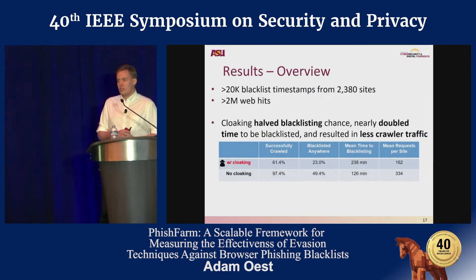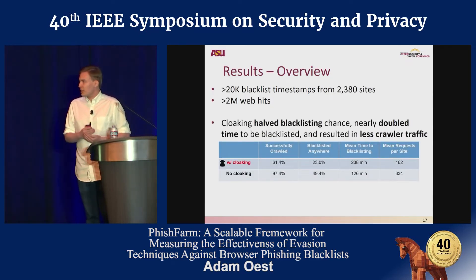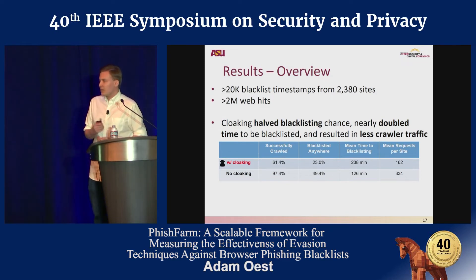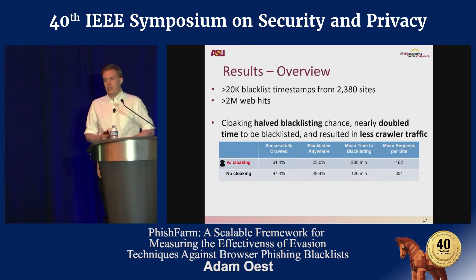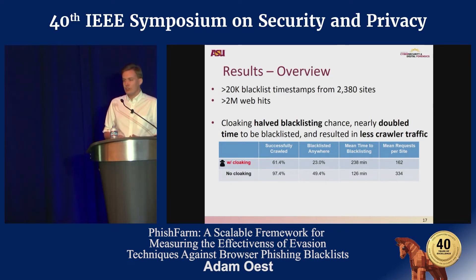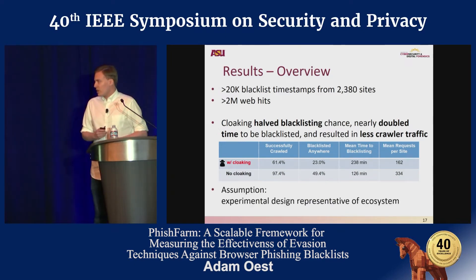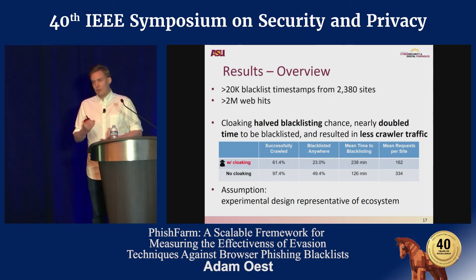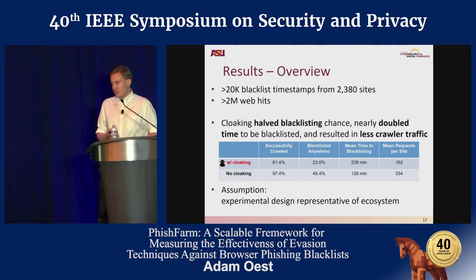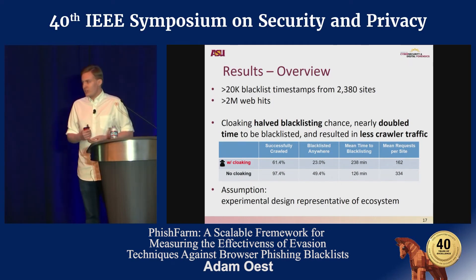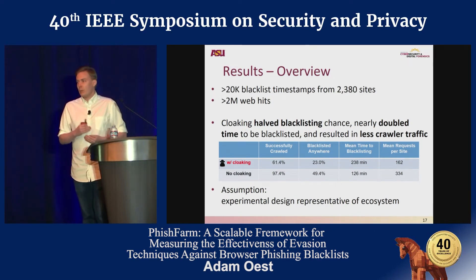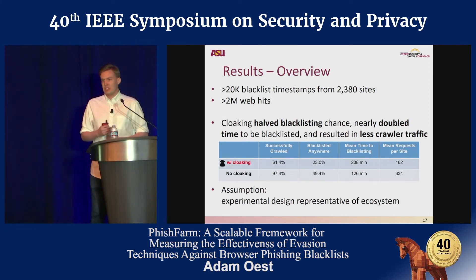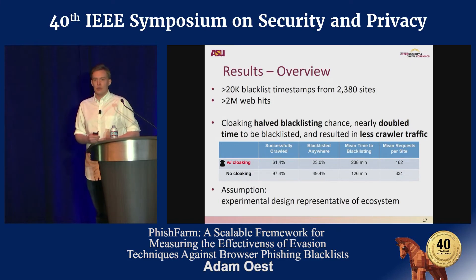In our experiment, we saw that cloaking reduced the likelihood of blacklisting by about half and doubled the time to blacklisting. In addition, sites that had cloaking techniques were less likely to actually be visited. One caveat: this assumes our reporting methodology is representative of the ecosystem. These results do not necessarily generalize to the entire population, but they are representative of our experimental design, which can always be modified as needed using this framework.